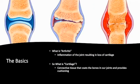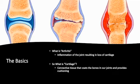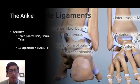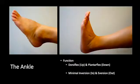The basics: we know that arthritis is really the inflammation of the joint leading to the loss of cartilage between the bones — the bumper between the bones. This cartilage is a connective tissue that coats our bones and provides cushioning. The ankle, as Dr. Amendola just told us, is three bones: the tibia, the fibula, and the talus. There's a lot of stability with the ligaments, and disruption of both of these factors is what leads to this arthritis.